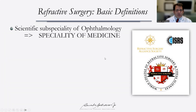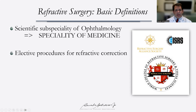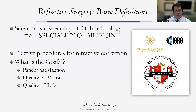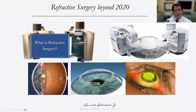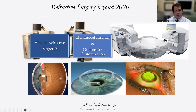When we think about refractive surgery, we evolved from a subspecialty of medicine with elective procedures for refractive correction, where the goal is not only to have a refraction corrected, but to have patient satisfaction with quality of vision and quality of life. We evolved to the understanding that this is a specialty medicine with a refractive college — the World College of Refractive Surgery and Vision Sciences, connected to the ISRS and the Refractive Surgery Alliance. Refractive surgery is not only laser vision correction on the cornea, phakic IOLs, and corneal therapeutic procedures — we also talk about refractive cataract surgery.